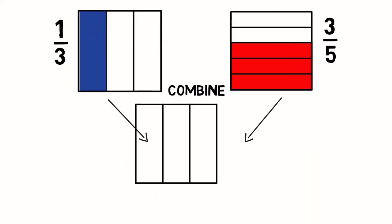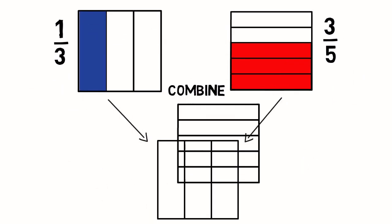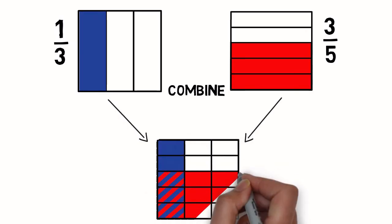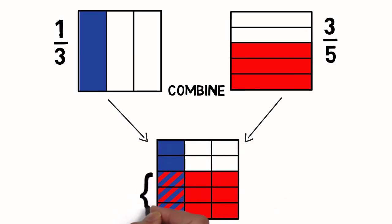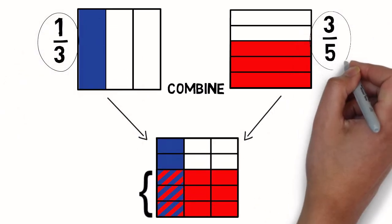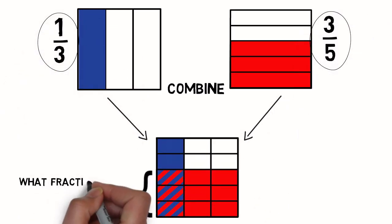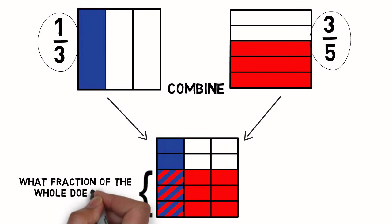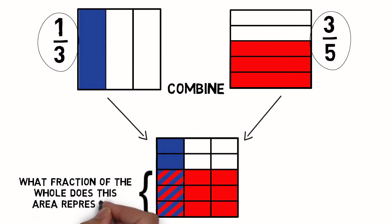Let us combine one-third and three-fifths. This overlapping area is the one-third of three-fifths. What part of the whole does this area represent?